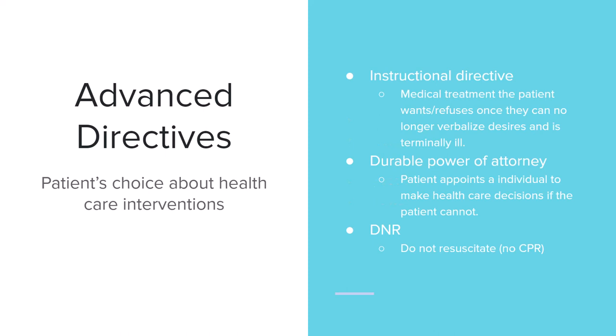Advanced directives are something the patient creates about their choices with health care interventions if they can no longer verbalize. When a patient is first admitted, your facility should ask about advanced directives. If the patient has a copy, you can make a copy and get it to medical records, or fill out a new one with your facility's form. If they don't have one, this is an important time to find out what care they want if they cannot verbalize their desires later on. An instructional directive specifies the type of treatment the patient wants or refuses once they can no longer speak for themselves, and is usually used for people who are terminally ill.